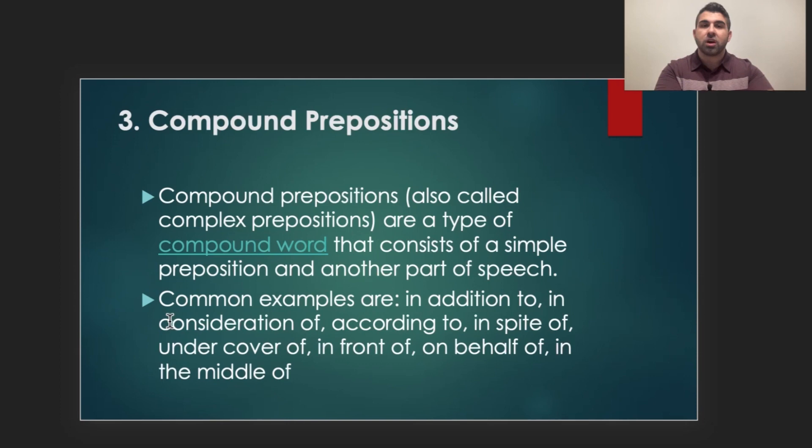The third type of preposition are called compound prepositions. Now, if you know what a compound word is, a compound preposition is quite similar. A compound word is when we take two words and we put them together to form one word or a new word. So, take the example of play and ground. We combine them to get playground. So, a compound preposition is similar because we are taking two types of prepositions, single words, prepositions, and we are combining them to create a compound preposition. So, examples include in addition to, in consideration of, according to, in spite of, under cover of, in front of, on behalf of, in the middle of.